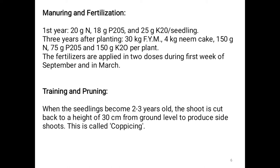Regarding training and pruning: when the seedling becomes two to three years old, the shoot is cut back to a height of 30 centimeters from ground level to produce side shoots. This operation is called coppicing.